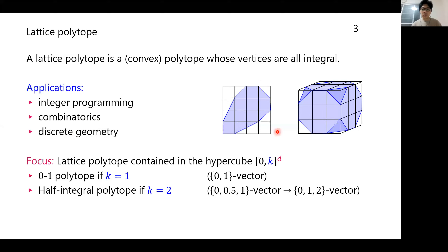Here are examples in dimension 2 and dimension 3. In this talk we focus on lattice polytopes contained in the d-dimensional hypercube of range k. For example, 0-1 polytopes are a special case when k equals 1, and half-integer polytopes are also a special case for k equals 2, where we need to multiply the polytope by two to make it a lattice polytope.